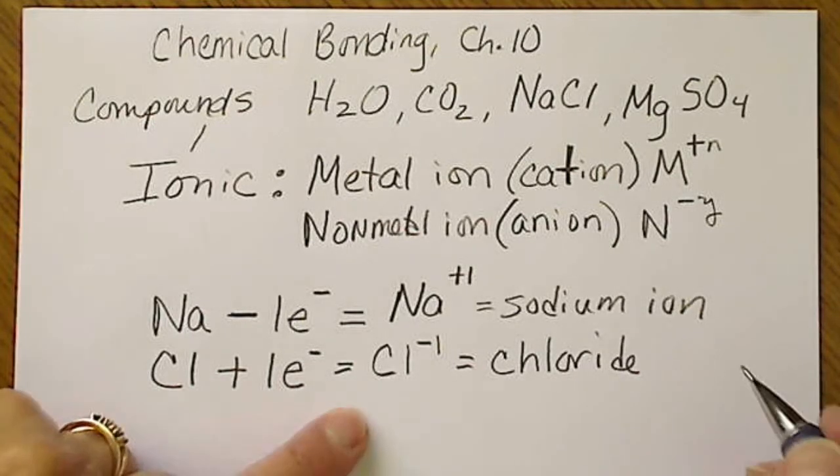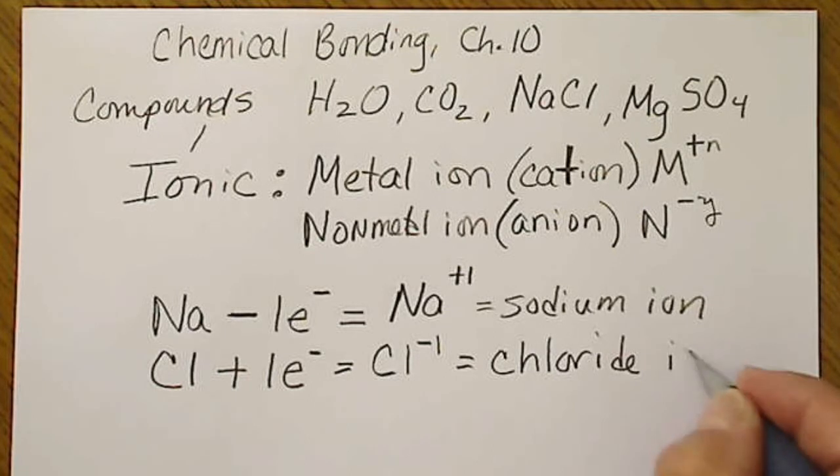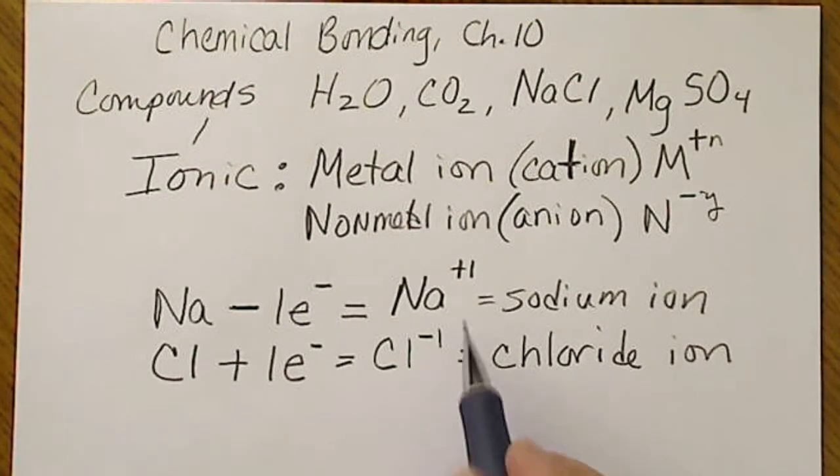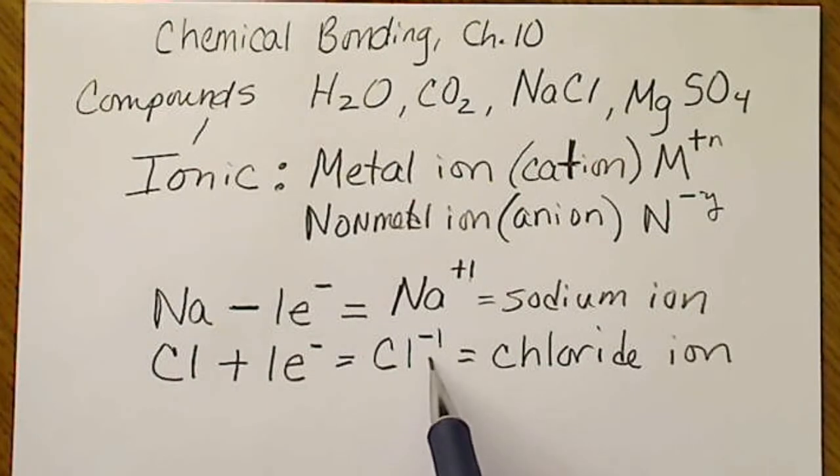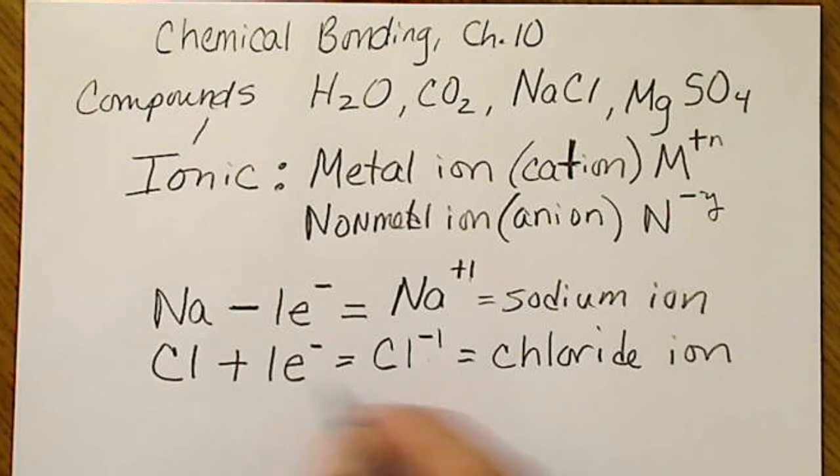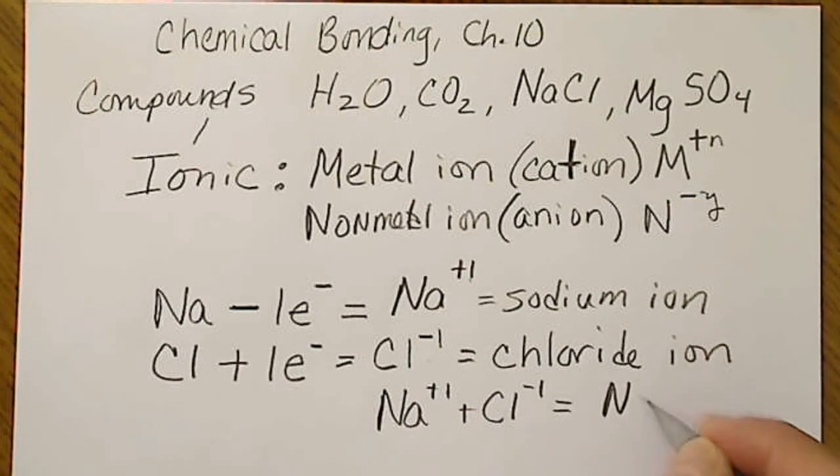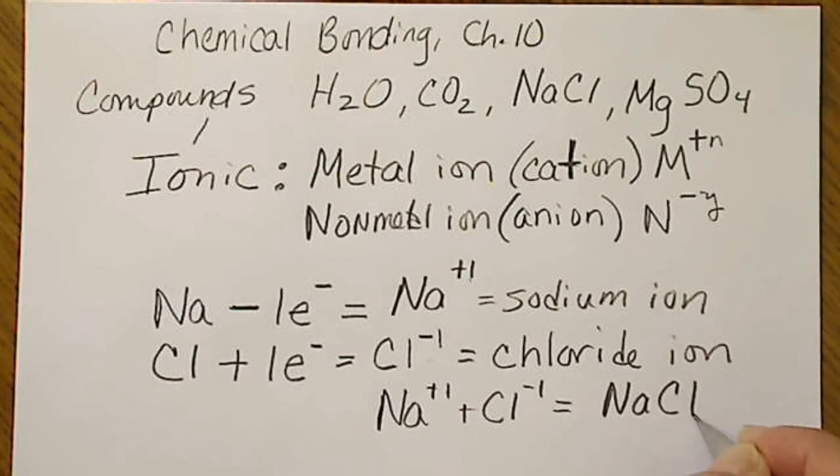This would be Cl minus one and the name of this becomes chloride. We don't say a chlorine ion, we change the ending to chloride. Since this has a positive one charge that cancels a negative one charge, the formula for an ionic compound from these two ions would be sodium plus one and chlorine minus one becomes NaCl, sodium chloride.